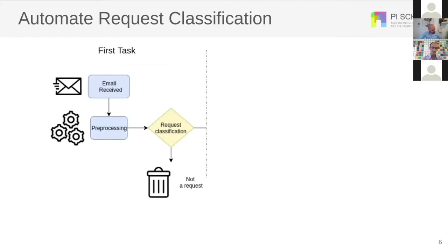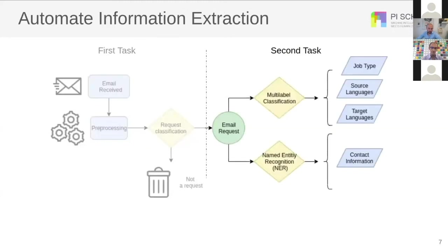In the last eight weeks, we have developed an automatic solution that will help Translated. This project is mainly divided into tasks: we receive the email, pre-process it, and that pre-processed email is the input to the request classification model. After this, because we don't have annotated data for slot filling directly, we decided to change the problem to a multi-label classification and an entity recognition problem.